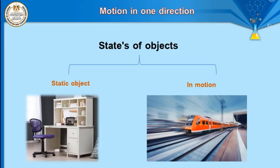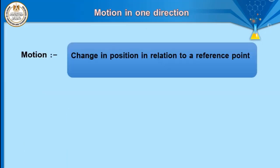So we have two states of an object: number one, a static object; number two, an object in motion. What is the meaning of motion? Motion is the change in position in relation to a reference point.